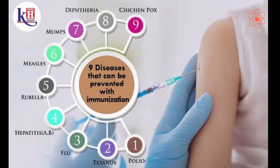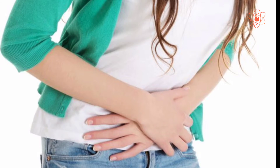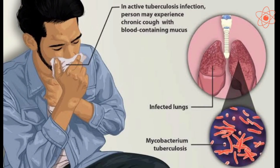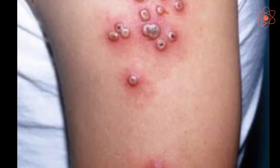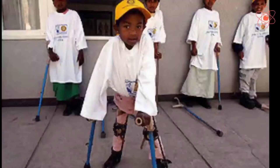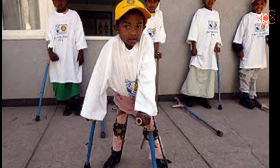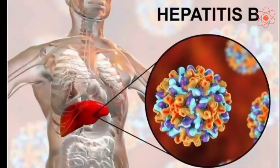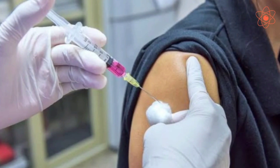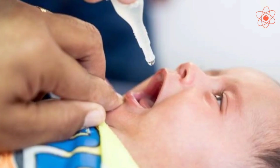Several diseases including cholera, tuberculosis, smallpox, tetanus, polio, and hepatitis B can be prevented by vaccination. A vaccine can either be injected or given orally.